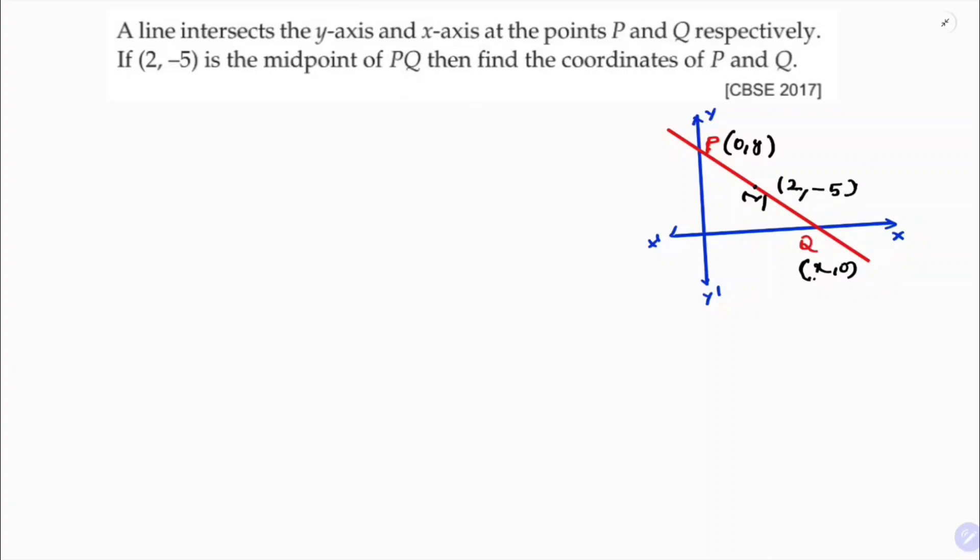So clearly M is the midpoint of P which is 0 comma y and Q which is x comma 0. The midpoint formula is x1 plus x2 by 2.